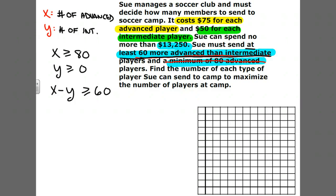The last constraint is based on money. If it costs $75 for each advanced player and $50 for an intermediate, that has to be less than or equal to the budget she has, which is $13,250. So 75X + 50Y ≤ 13,250. Here is the system of inequalities or all of the constraints that I need to graph to obtain my feasible region.